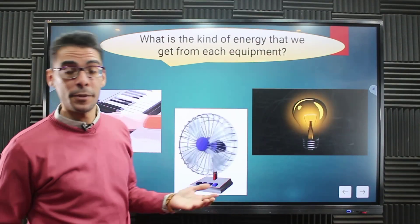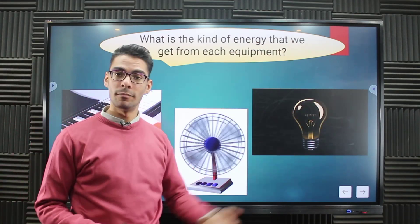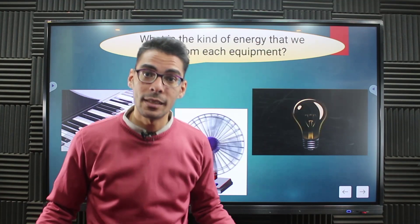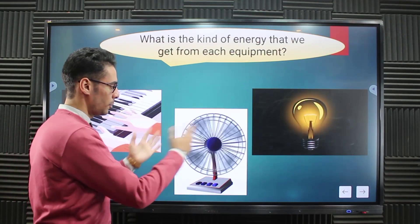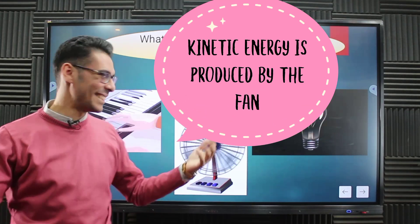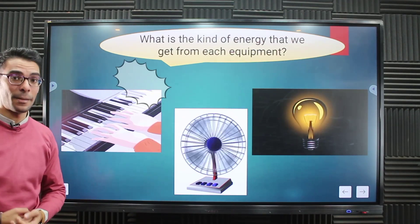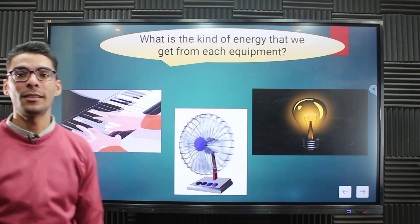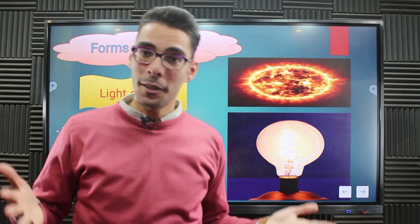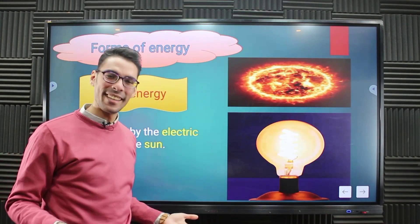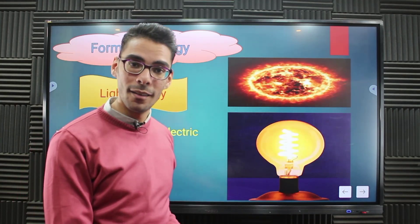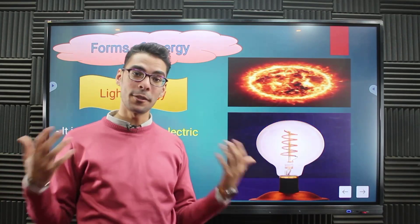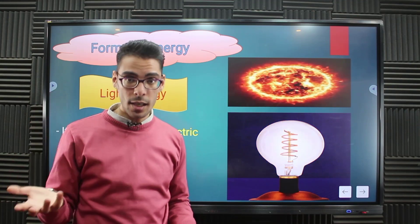Can you tell me which form of energy is represented by each of the following? Here is an electric lamp — which form of energy is represented? Light — excellent! What about the electric fan? The movement of the air from the fan is kinetic energy. And here is a piano — it produces sound energy. Now here is the sun and here is an electric lamp — which form of energy is produced from them? Light energy — they produce light energy. Sometimes we say it's heat and light energy together.